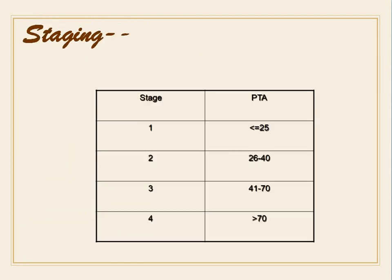Staging is based on audiometrically proven hearing loss: Stage 1 is less than 25 dB PTA, Stage 2 is 26 to 40 dB, Stage 3 is 41 to 70 dB, and Stage 4 is greater than 70 dB.